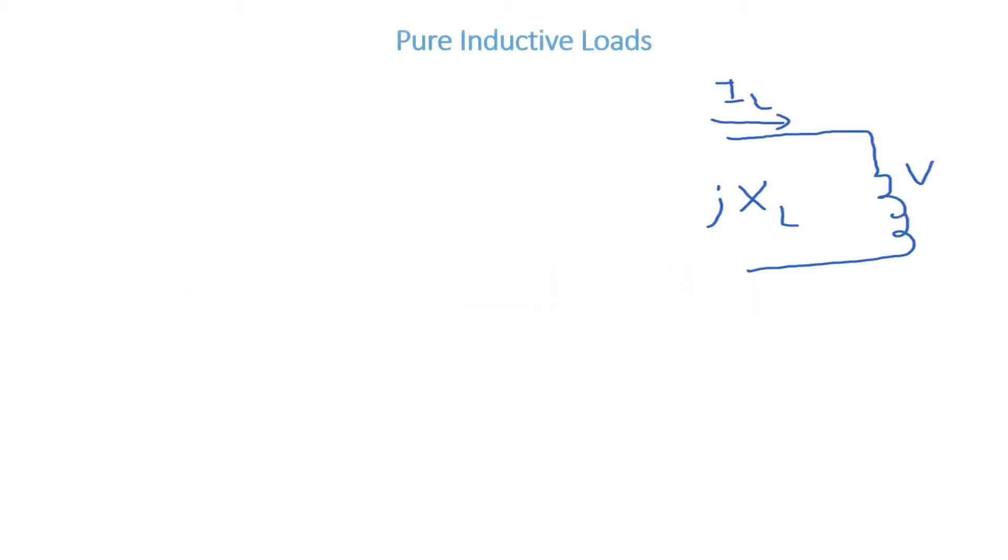Hello and welcome to Engineering Simple. This video will talk about pure inductive loads. So we have the current flowing through the inductor, which is the peak value of the current times cosine(2π × frequency × time + angle - 90°). We'll see why minus 90 degrees. Theta is the phase angle of current, t is time, f is frequency in Hertz.